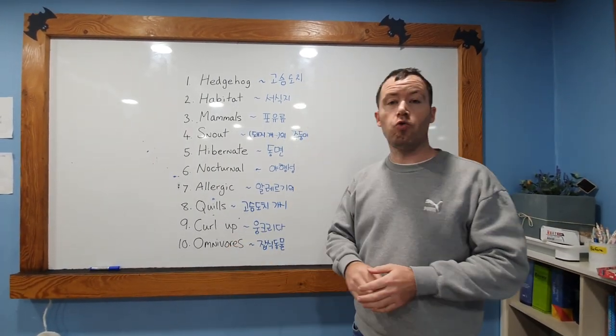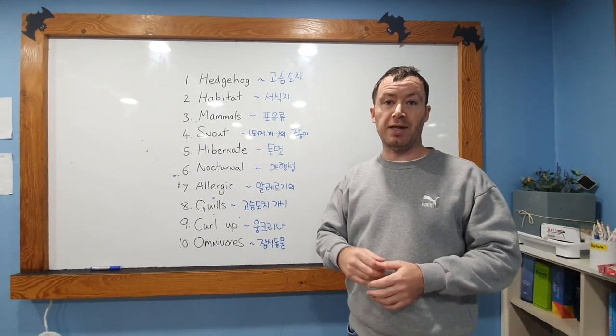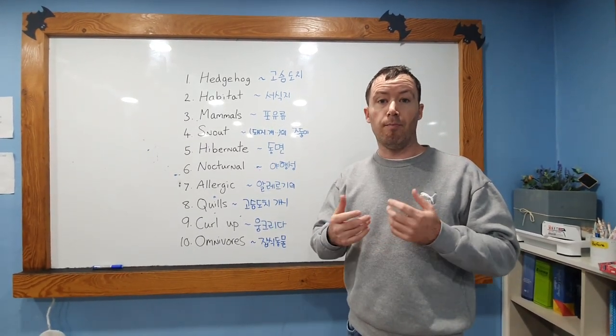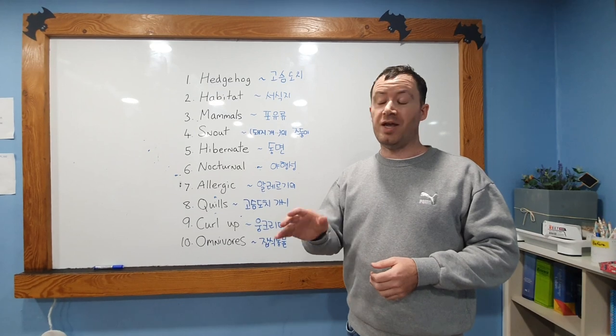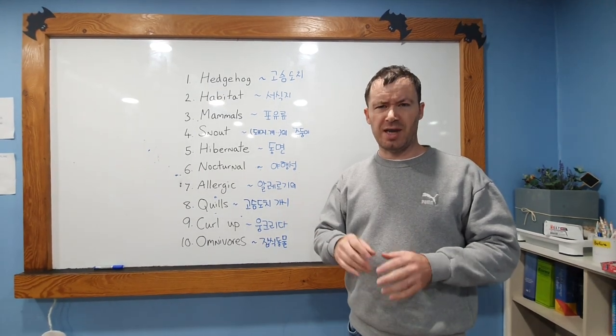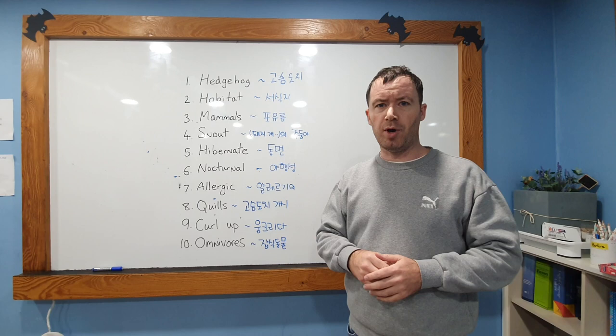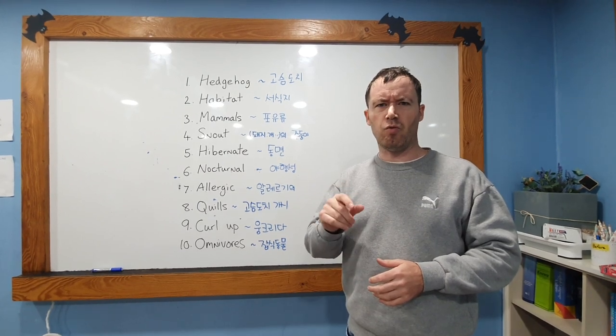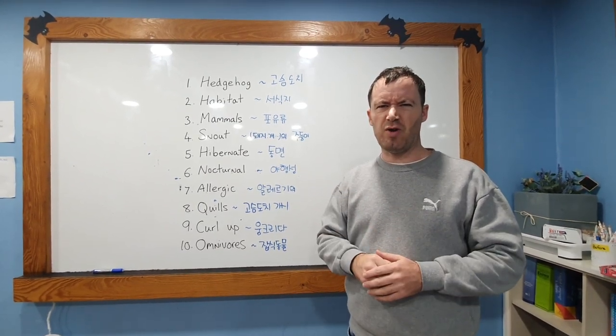Hedgehogs are called omnivores, which means basically they can eat most kinds of foods. But his favorite food is, surprisingly, insects and pests from a garden. So he likes beetles and worms, kind of creepy things.